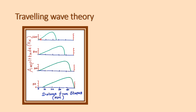When the waveform is going, it is initially weaker, then it gets stronger and stronger, and at one point it reaches the maximum level. That point is the resonance point of the basilar membrane.